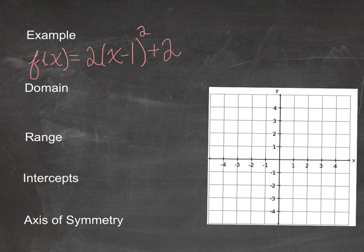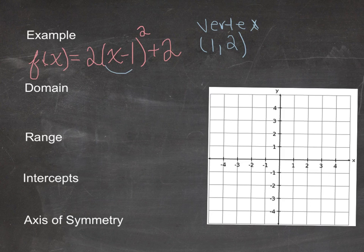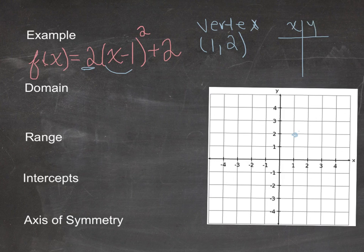Let's see a couple of examples. For the first one, I have the quadratic in general form. I'll start by plotting the vertex. The vertex is going to be at the point (1, 2) — remembering that I change the sign of whatever is in the brackets with x. The a value is positive 2, so the parabola is going to be opening upwards. I'll make a table of values to figure out what's happening on either side of the vertex, keeping in mind it should be symmetric.